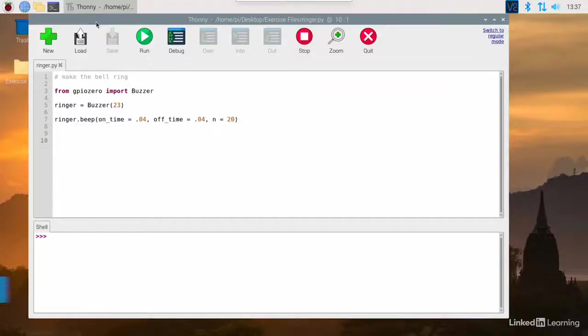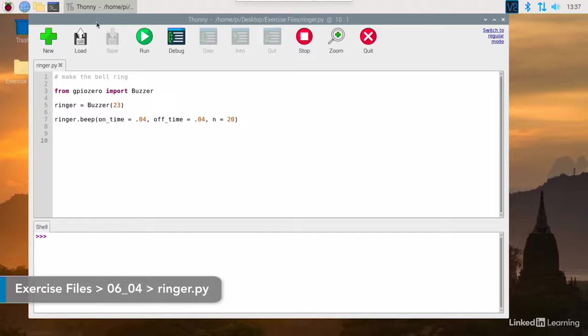The programming to drive the bell is simplicity itself. I'm using the buzzer method from GPIO Zero and connected it to GPIO 23. The buzzer method allows me to control the speed of vibration and the number of times the ringer rings. In this case, it'll turn on for 0.04, turn off for 0.04, and it'll ring 20 times.